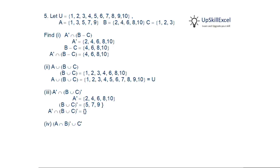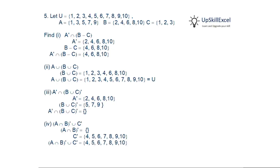Fourth question: find (A intersection B) complement union C complement. Since A and B are disjoint, their intersection is null. C complement includes all items from 4 to 10. The union of null with C complement gives C complement.